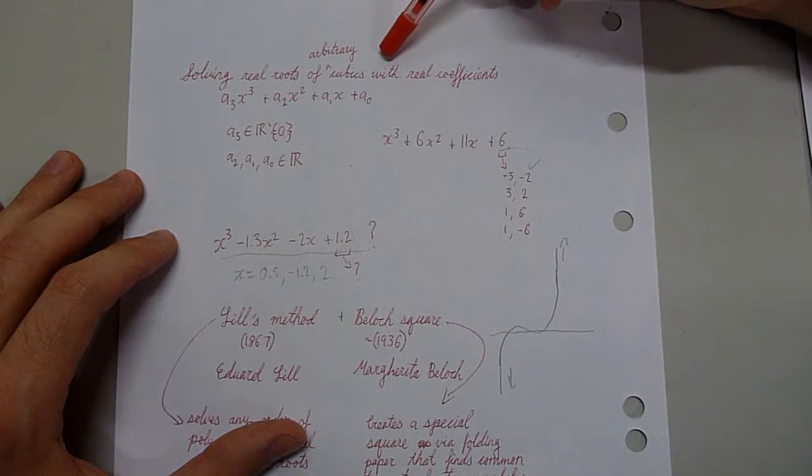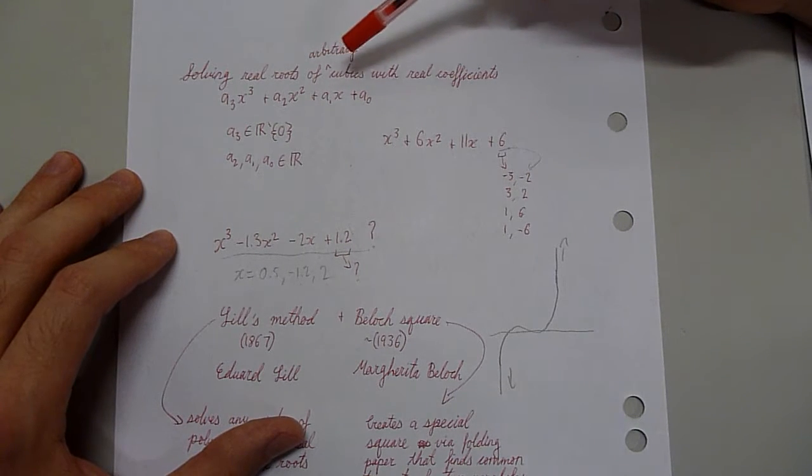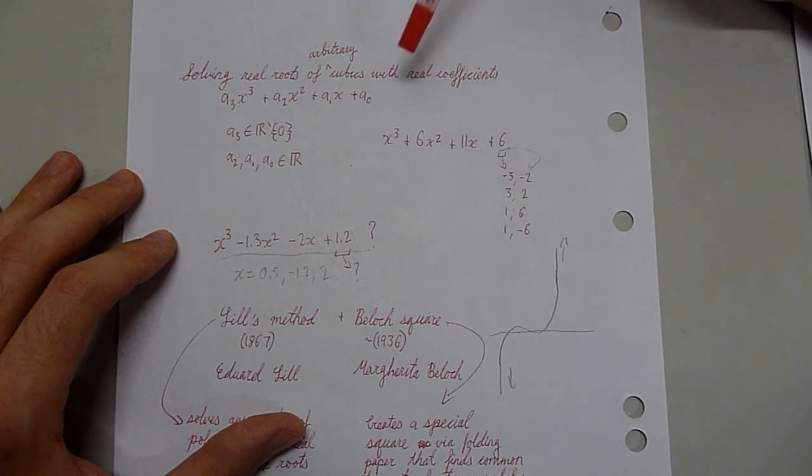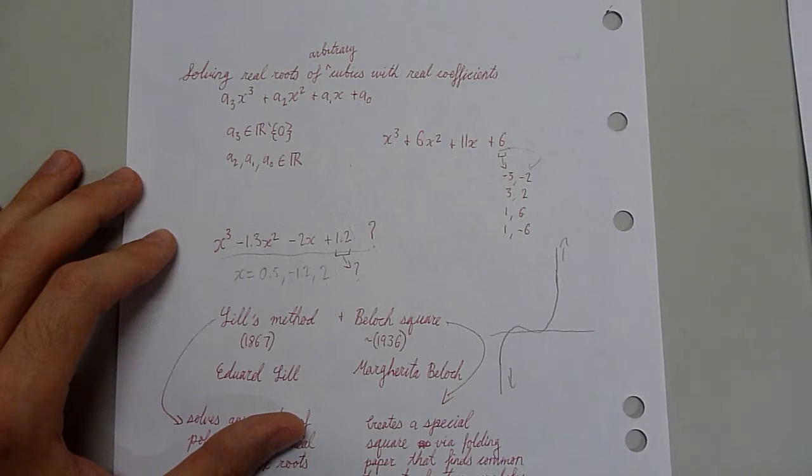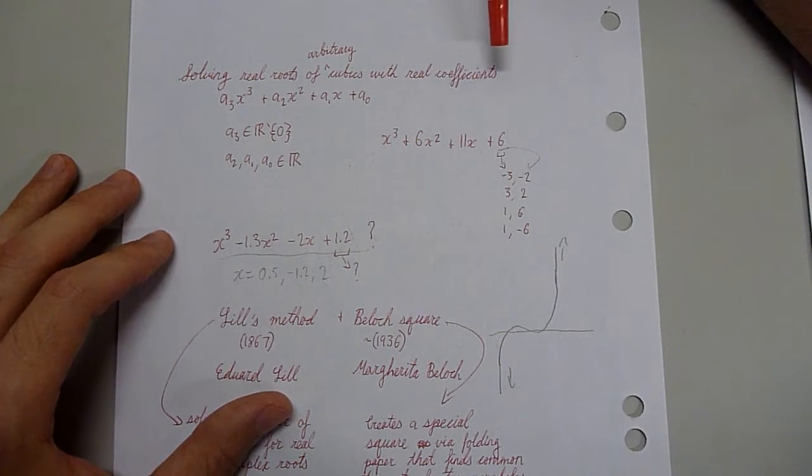So the other day I found what I reckon is one of the coolest mathematical techniques that I've seen. You're just going to have the sickest time solving questions with this. Basically, it turns out that you can solve real roots of arbitrary cubics that have real coefficients by just folding paper.